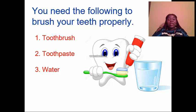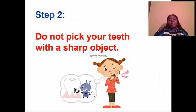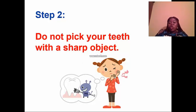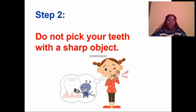To brush your teeth properly, you need a toothbrush, toothpaste, and water. Now, step two tells us about something we should not do. Step two says: do not pick your teeth with a sharp object. Do not pick your teeth with a sharp object.